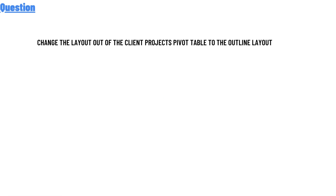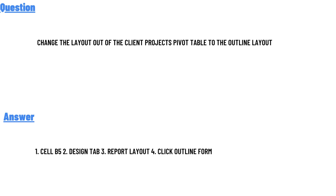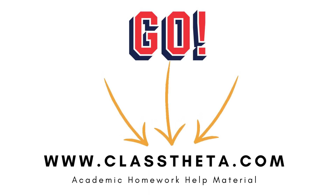Today's question is: changing the layouts of the client's projects by what — tables to the Outlines layouts? The correct answer is: one — cells; two — Designs tabs; three — reports layouts; four — clicks Outlines. That is the answer to the question. If you are searching for any other question, please visit www.classdata.com.